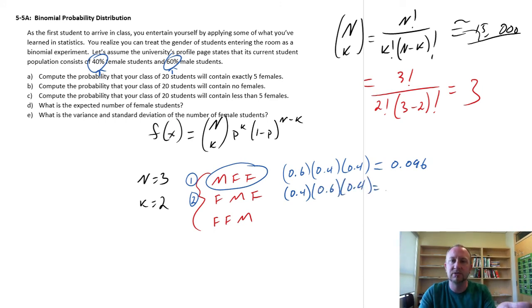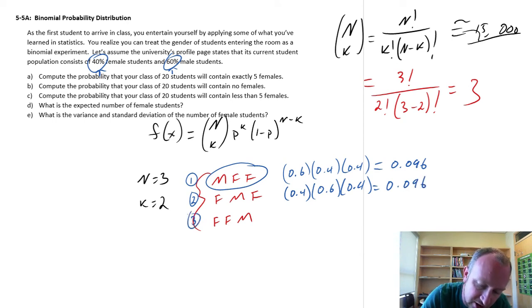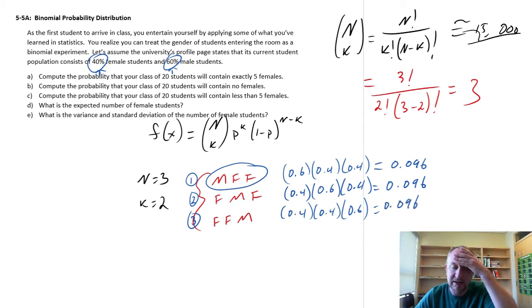Well as you can probably already see, the product of three numbers is going to be the same regardless of the order in which those calculations are done. So this is going to be 0.096. And again if we look at this third one, this is 0.4 times 0.4 times 0.6, and so that's going to be exactly the same.